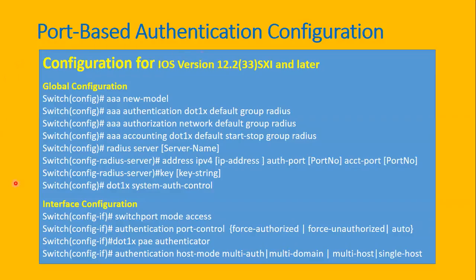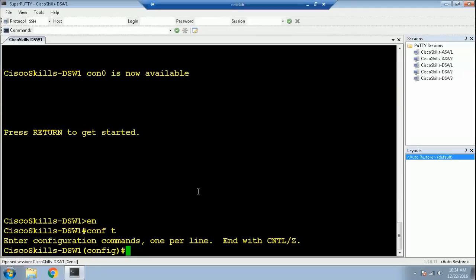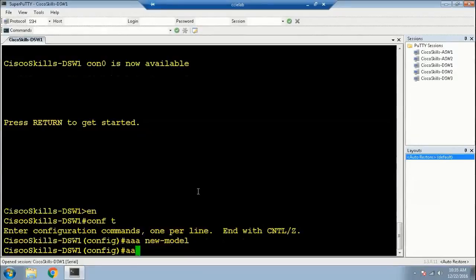Here is the general configuration for port-based authentication for IOS version 12.2.33 SXI and later. It also has two sections: global configuration on the switch and interface configuration for 802.1X. We are on Cisco Skills distribution switch one, which has the newer IOS version. Let's get started with the global switch configuration. First, enable AAA on the switch, then define the authentication method for 802.1X: 'aaa authentication dot1x default group radius'.